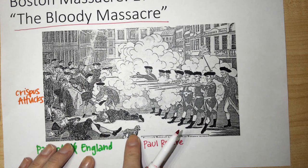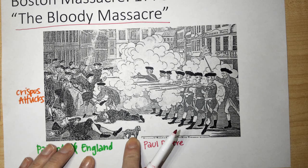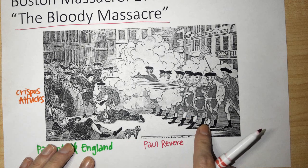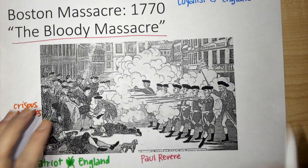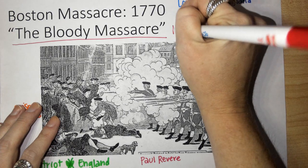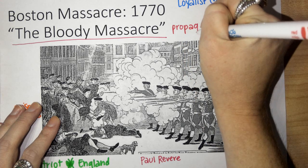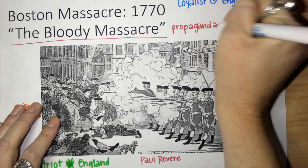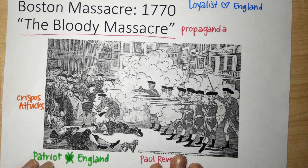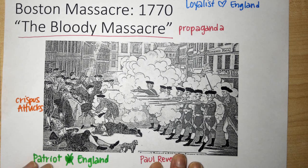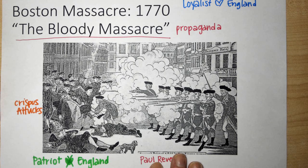And look — even a little puppy dog is shown in the picture. Who's going to fire into a crowd when there's a sweet little innocent puppy dog? How dare those British soldiers? So Paul Revere creates this Bloody Massacre picture, and it is going to be used as propaganda — trying to convince people to join your side. This picture is going to be put on display throughout newspapers around the 13 colonies and used to convince people to become Patriots.